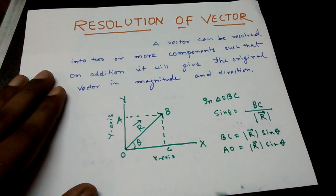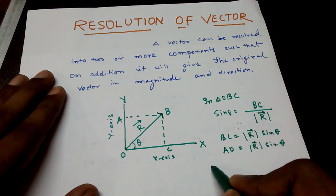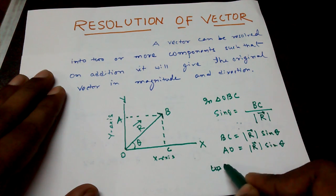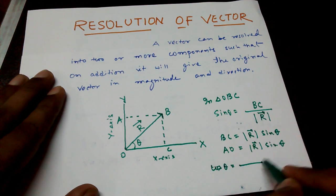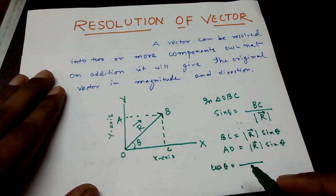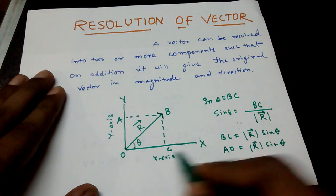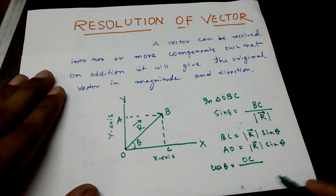Similarly, if in the triangle we try to find the value of cos theta, we will get cos theta is equal to base by hypotenuse. Here the base is OC.